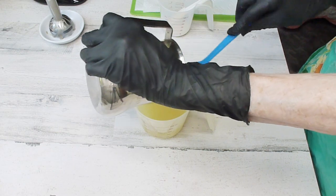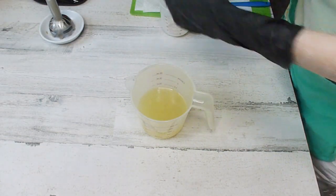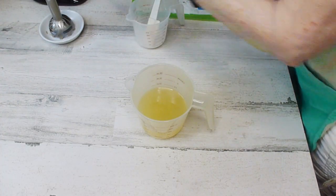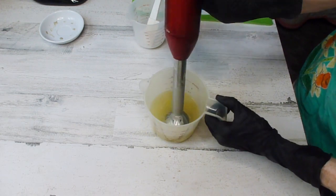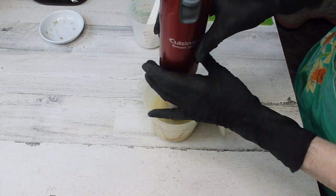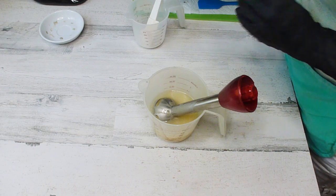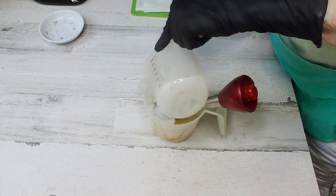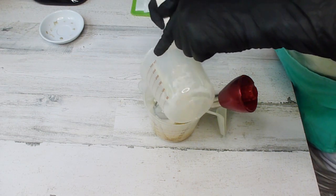So this is going to be another activated charcoal layer for the top frame. I'm going to give it a little stick blend here. Add our coconut milk. I just love what coconut milk does for soap. It just makes the most creamy bar.